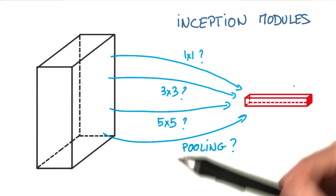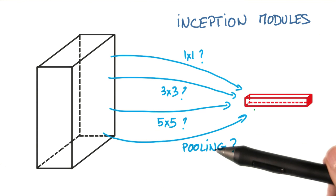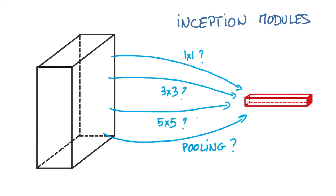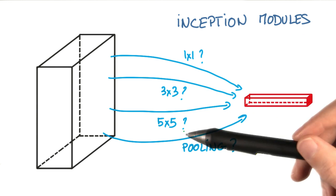The idea is that at each layer of your convolutional network, you can make a choice. Have a pooling operation, have a convolution, and then you need to decide: is it a one by one convolution, or a three by three, or a five by five?